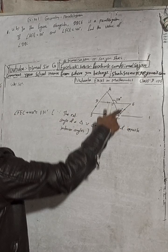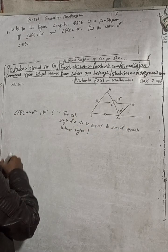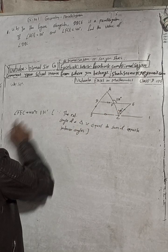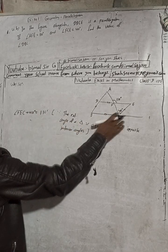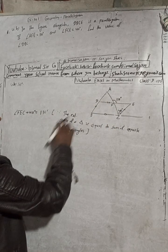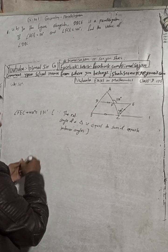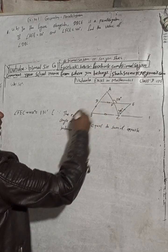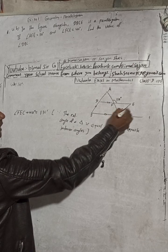Angle FEC, FEC plus 40 equals 110 degrees, because this is exterior angle of a triangle.